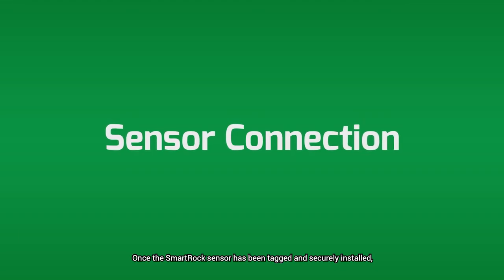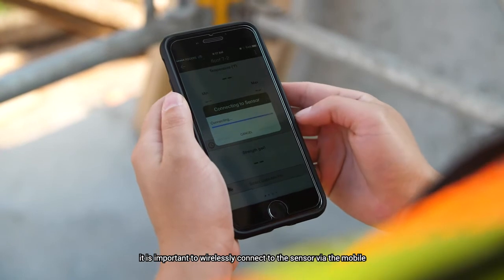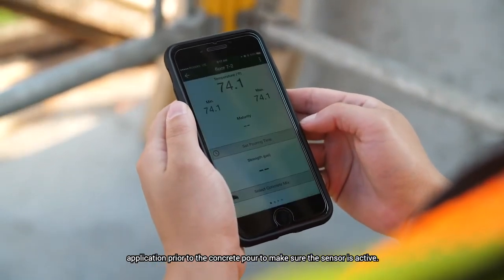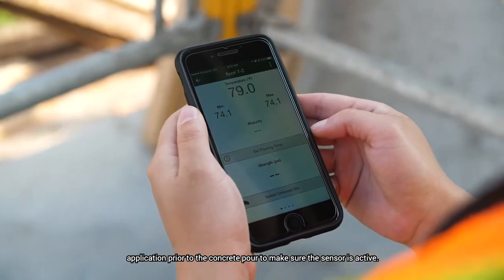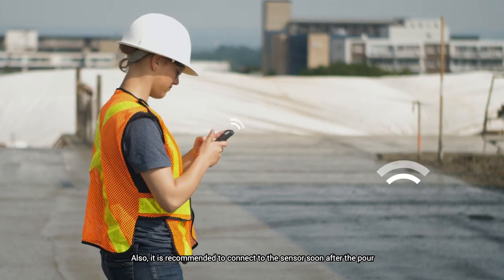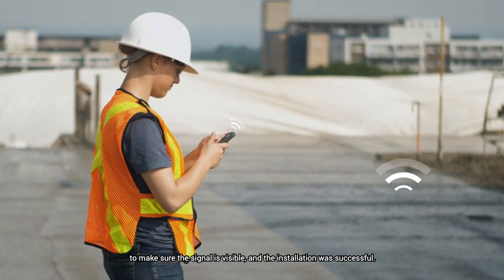Once the SmartRock sensor has been tagged and securely installed, it is important to wirelessly connect to the sensor via the mobile application prior to the concrete pour to make sure the sensor is active. Also, it is recommended to connect to the sensor soon after the pour to make sure the signal is visible and the installation was successful.